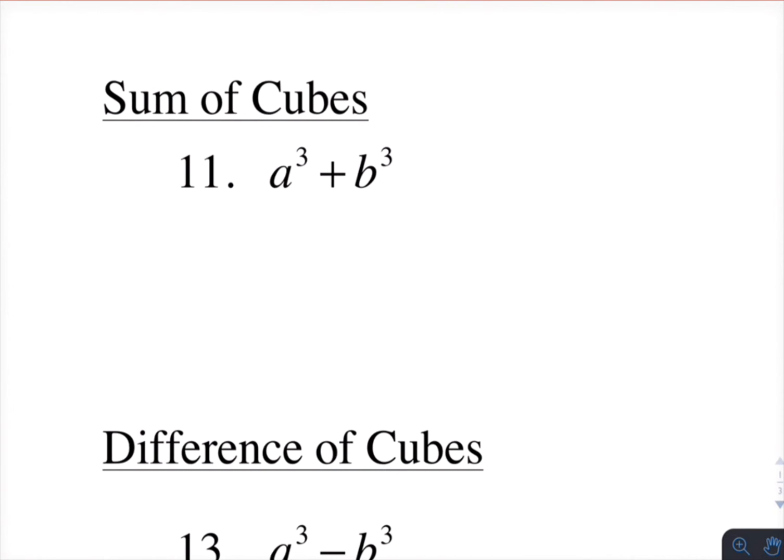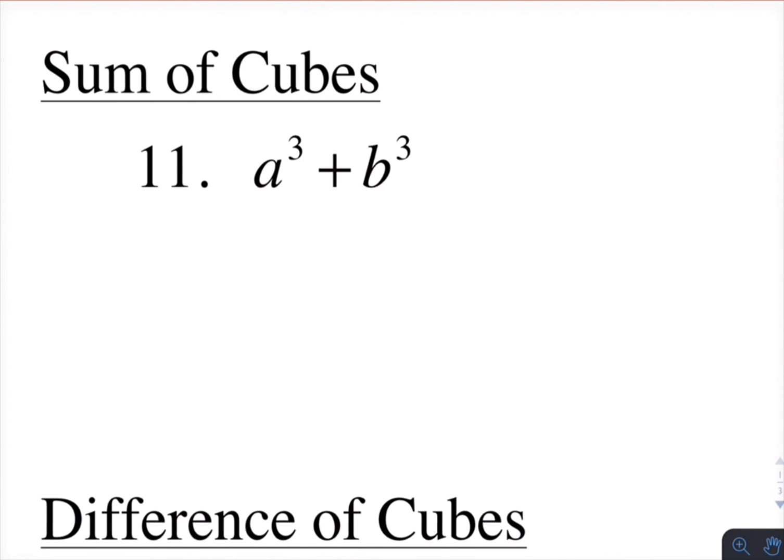Okay, sum of cubes. So when you have two cubes being added together, that will factor into a binomial times a trinomial. And so that's the first one squared. This middle term are the two terms in the binomial multiplied together. And then the last term is always the square of the second term of your binomial. And then the signs, if I get rid of that highlighting.